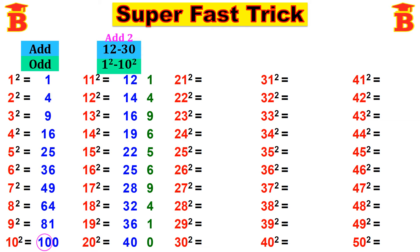Therefore: 11 squared equals 121, 12 squared equals 144, 13 squared equals 169, 14 squared equals 196, 15 squared equals 225, 16 squared equals 256, 17 squared equals 289, 18 squared equals 324, 19 squared equals 361, and 20 squared equals 400.